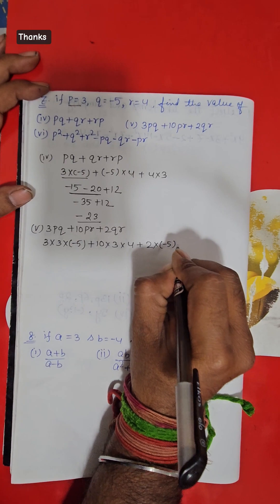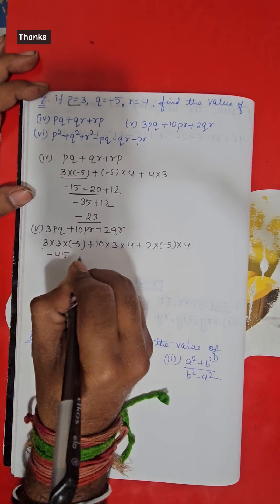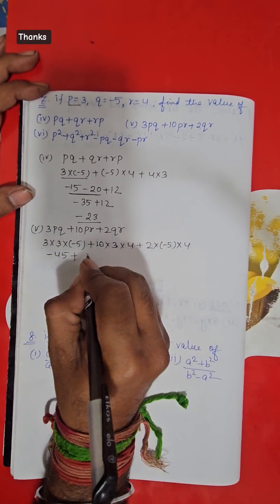So let's solve. 3 into 3 is 9, into minus 5 is minus 45. Plus 3 into 10 is 30, plus 4 is 30 into 4, that will be 120.